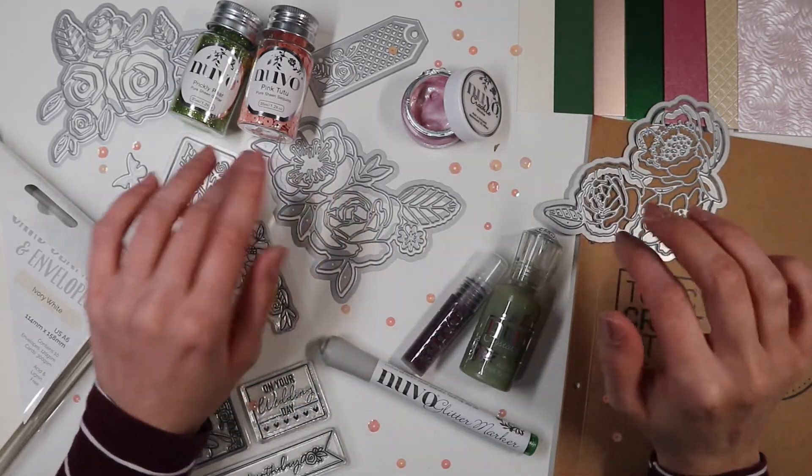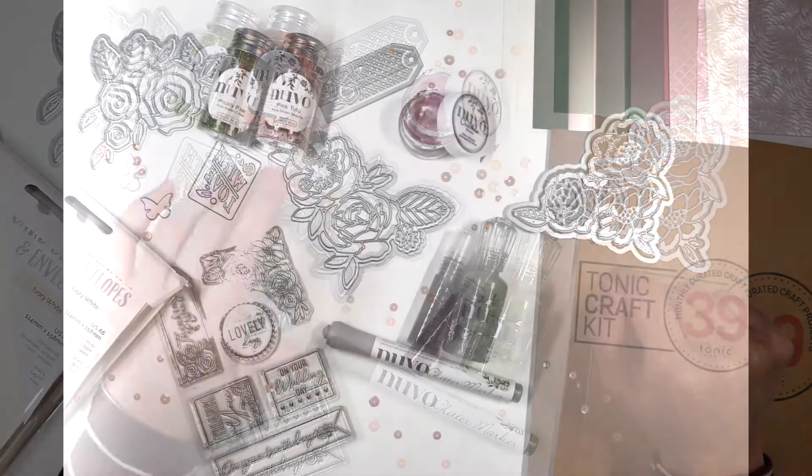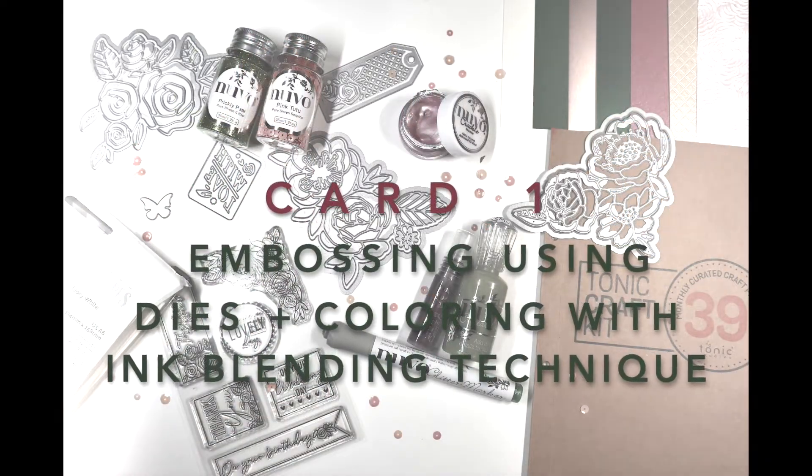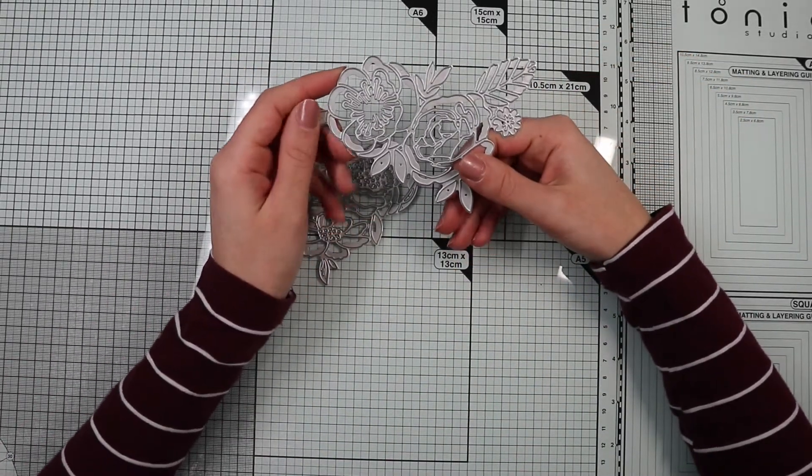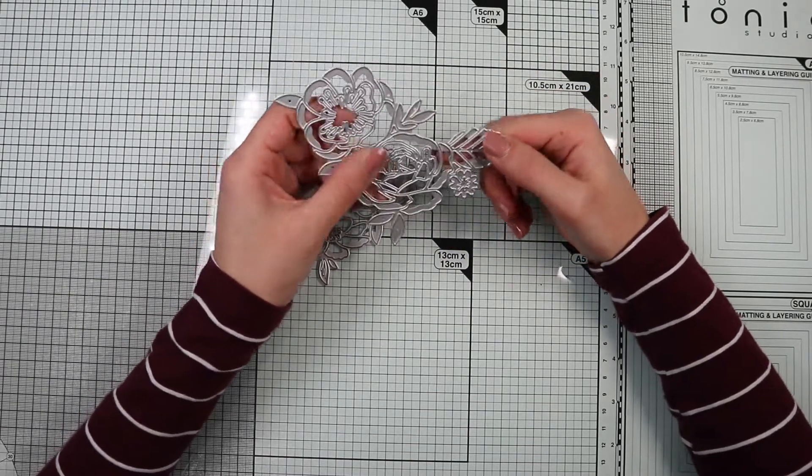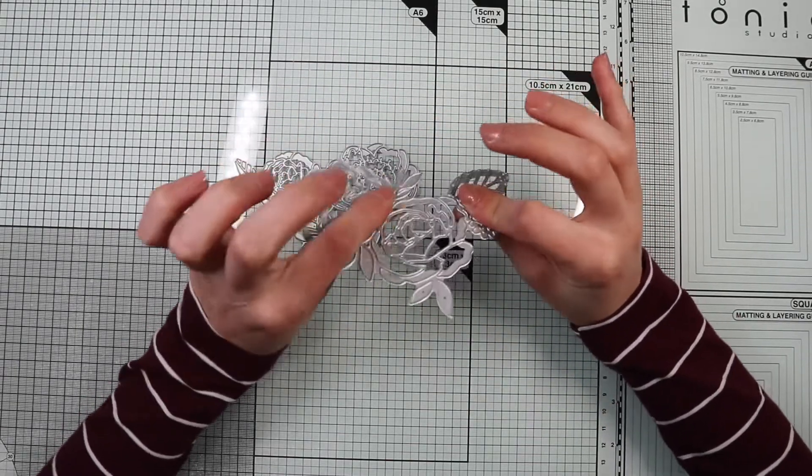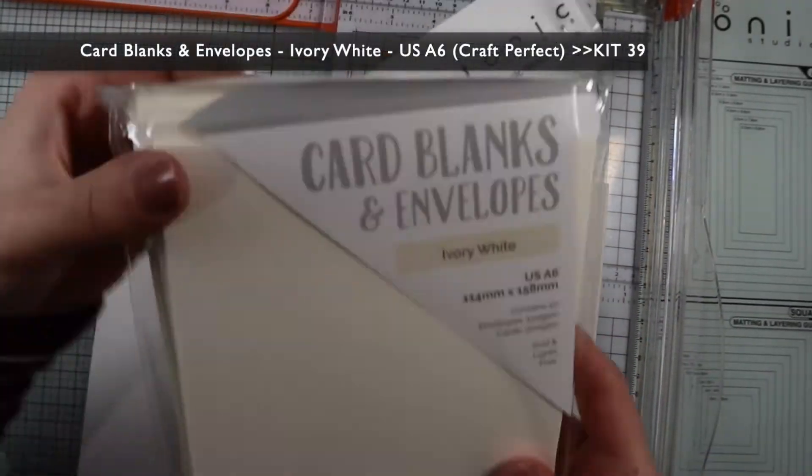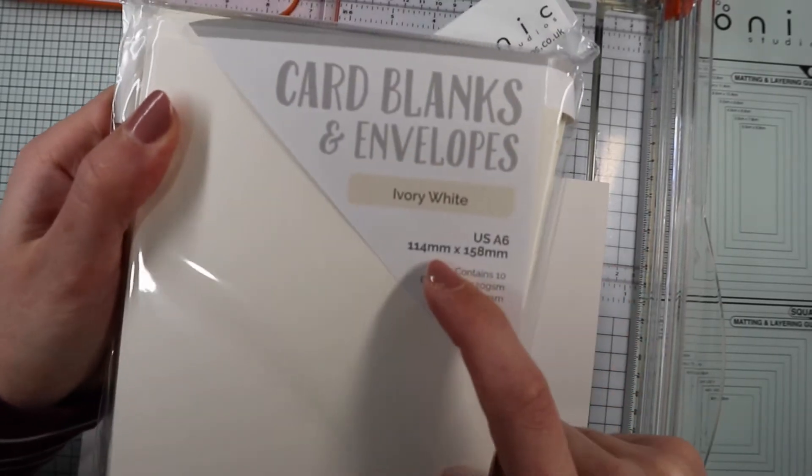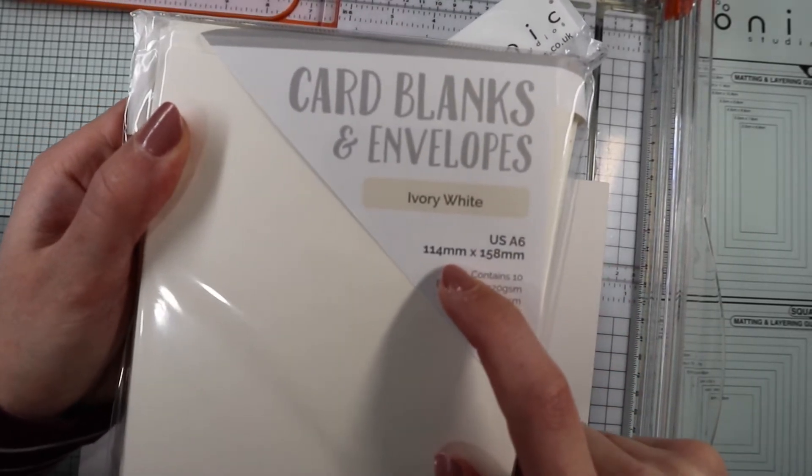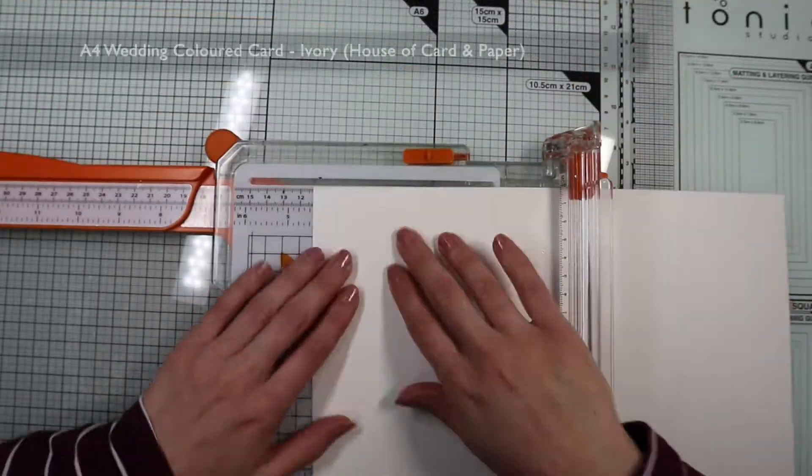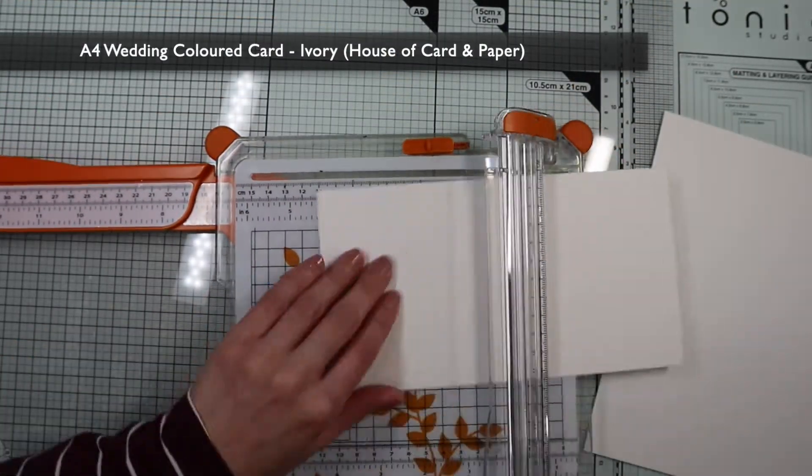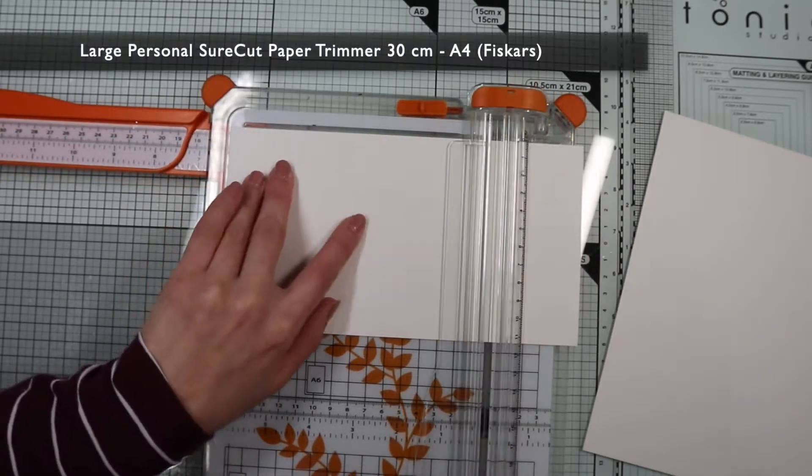But now it's time to start creating our cards. With the first card, I'd like to show you how to stretch your dies by using them not only to die cut, but also to create an embossing texture. For my card base, I will use one of the ivory cards included in the kit. First of all, I get a panel of 11.4 cm by 15.8 cm, which is the same size as the card base.